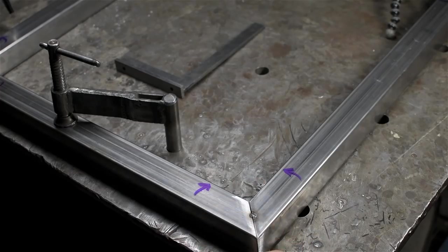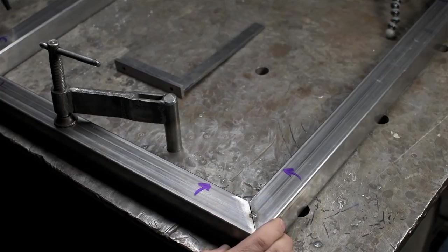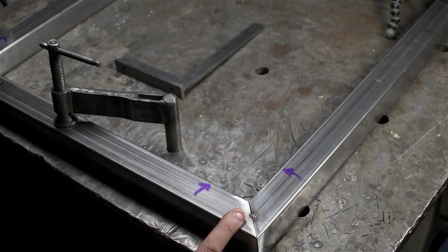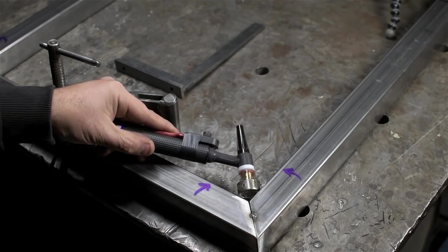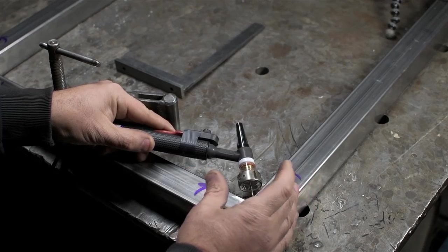But instead of making a whole lot of noise and potentially breaking a sweat, I'm going to take this weld contraction to my advantage. I'm going to start off by welding these inside corners and hope that that cooling weld bead pulls this corner closed.